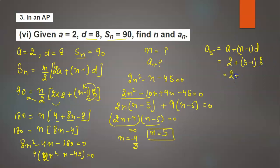2 plus 4 times 8. Here 2 plus 32 equals 34. So the value of the nth term is 34. Thank you very much.